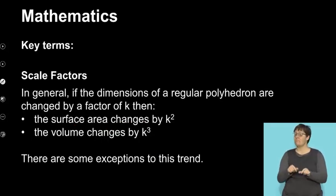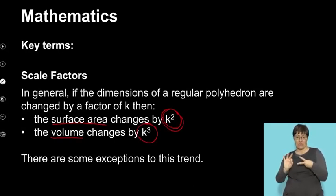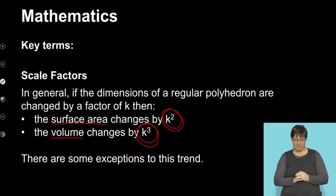In general, if the dimensions of a regular polyhedron are changed by a factor of k, then please note that the surface area is changed by k² and the volume is changed by k³. Please note there are some exceptions to this trend.